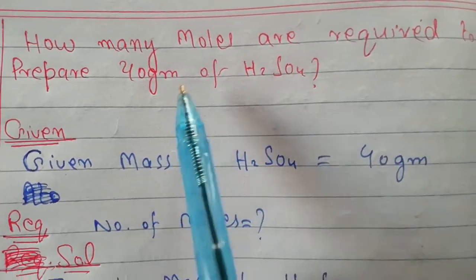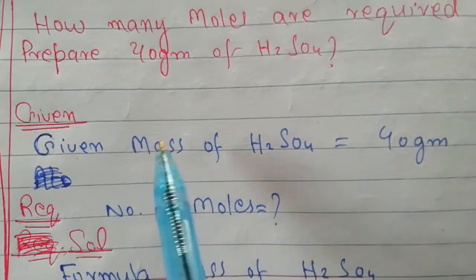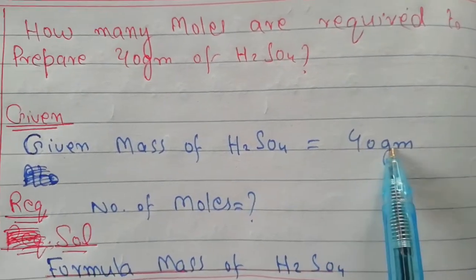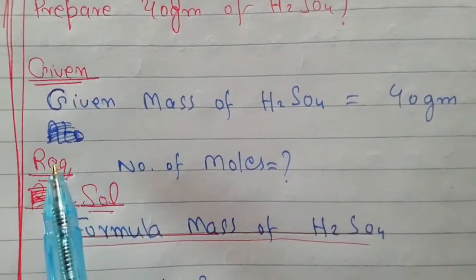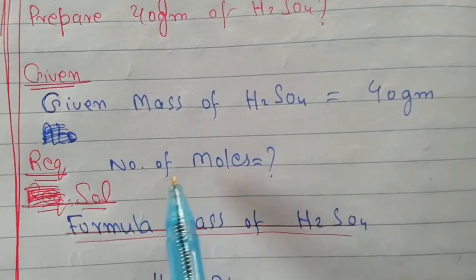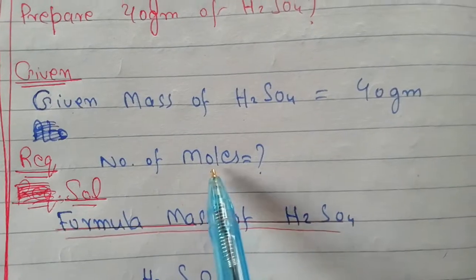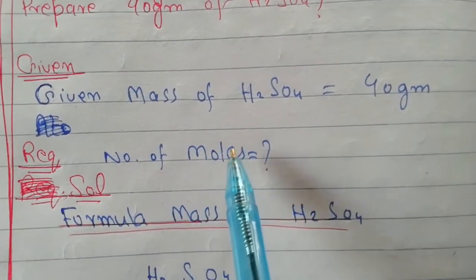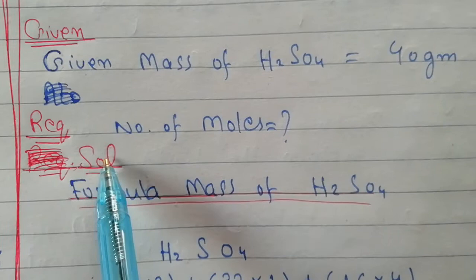Given mass of sulfuric acid is 40 grams. Required: number of moles. Now the solution heading.